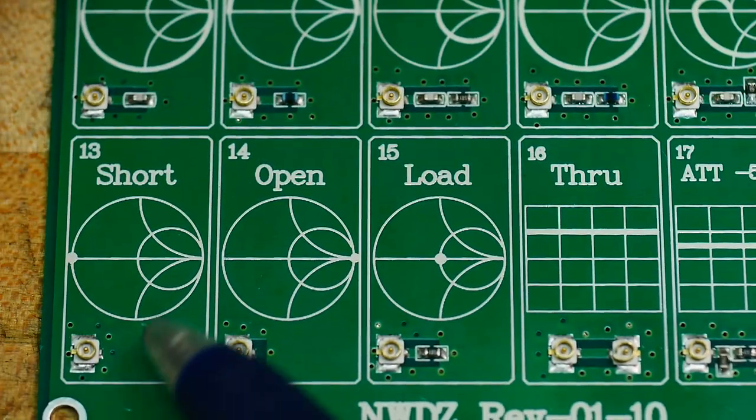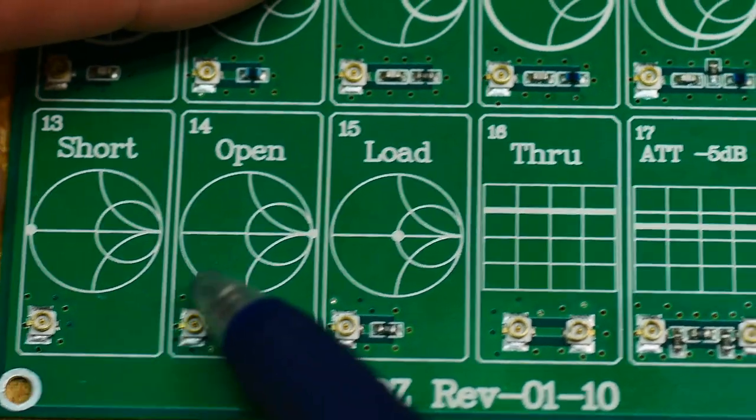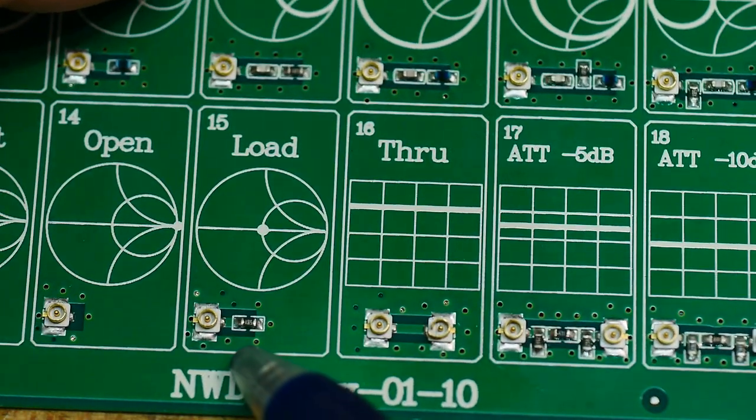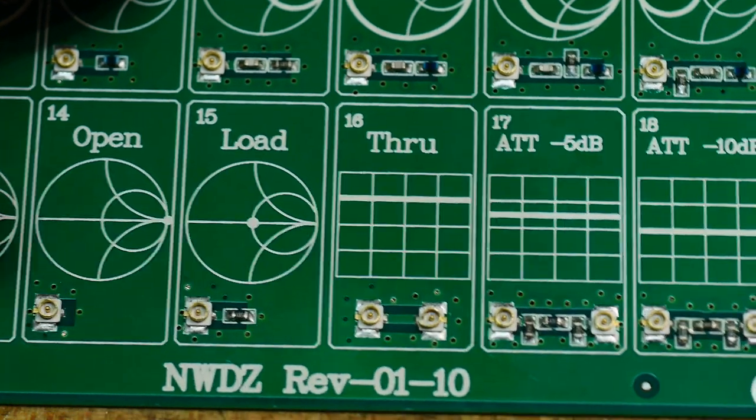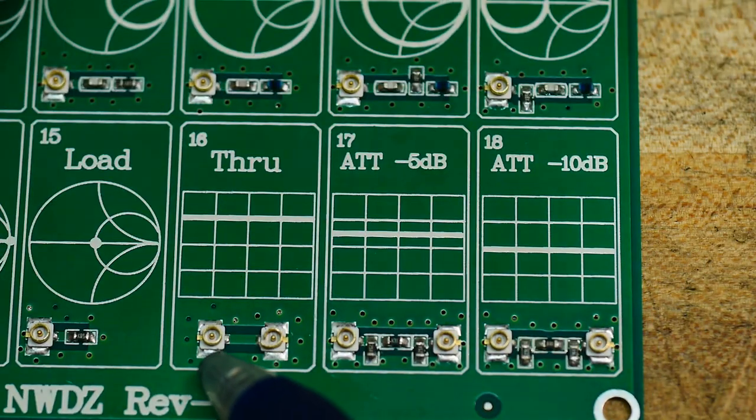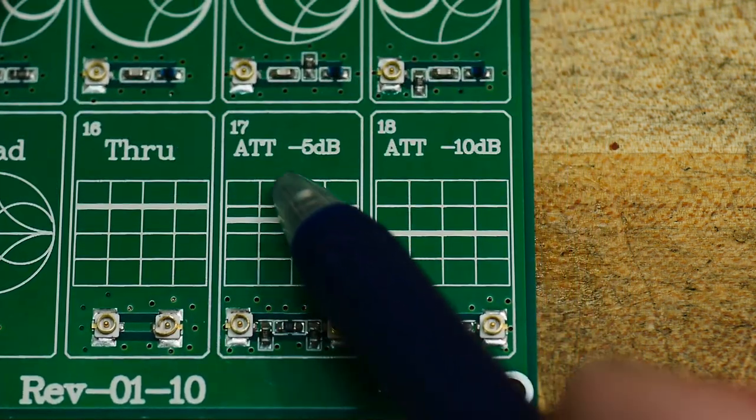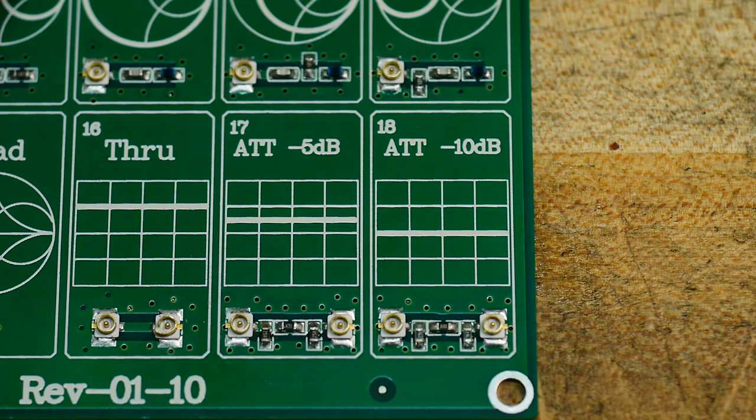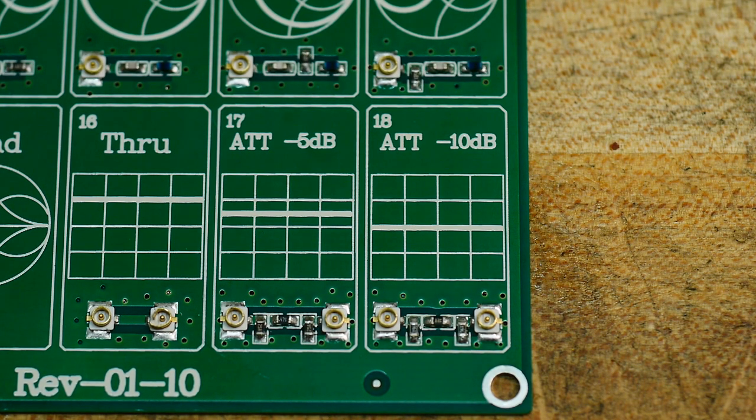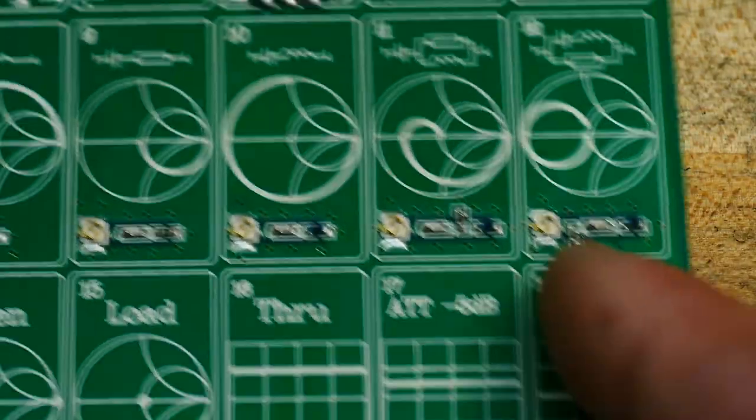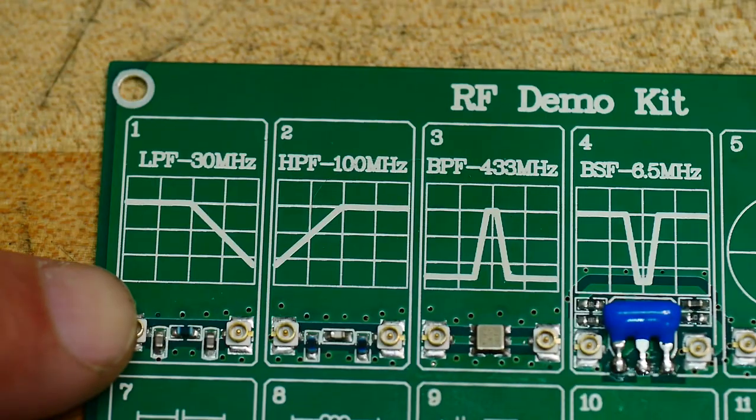And then this one is capacitor inductor across a resistor to ground. And then here is the short, the open, the load, just 50 ohms to ground. The through, just a little connection. And then a 5 dB attenuator and a 10 dB attenuator. So let's get the nano calibrated and we will measure each one of these.